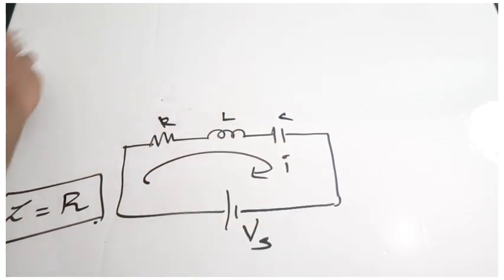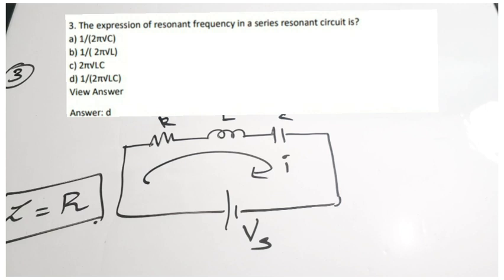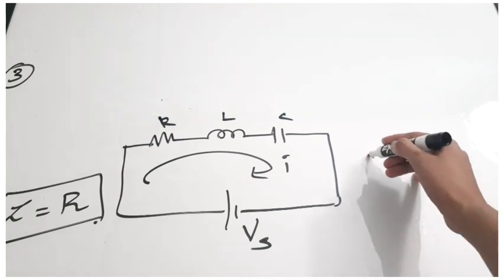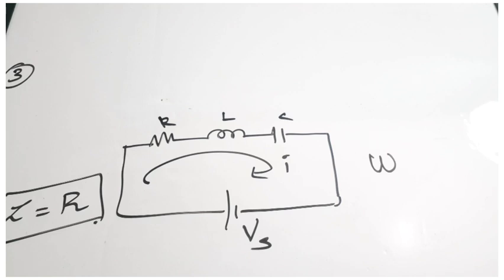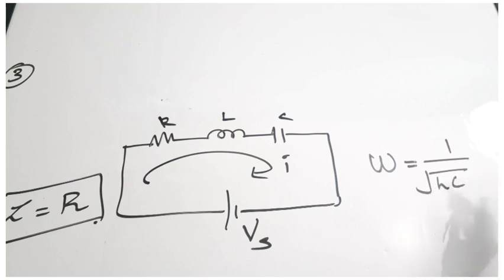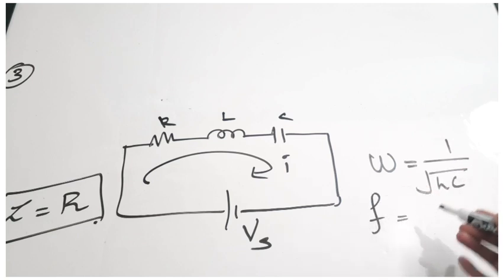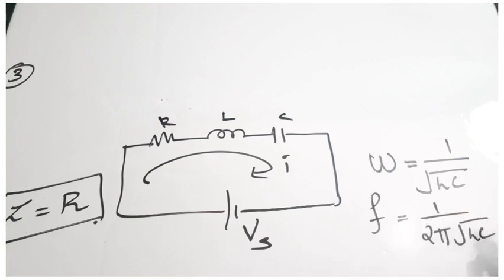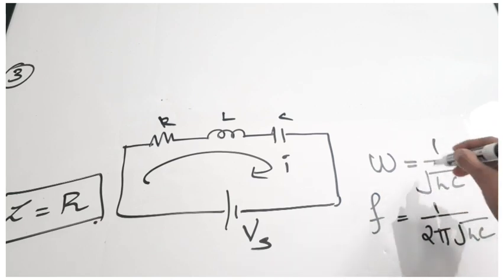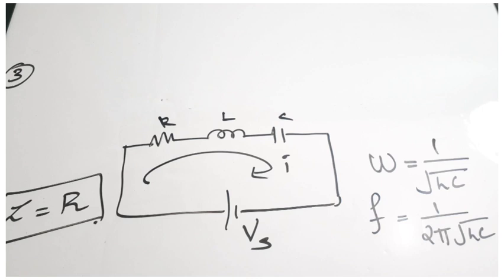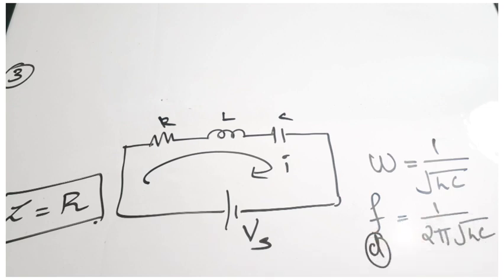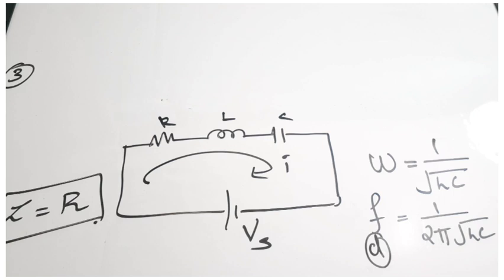Third question: the expression of resonant frequency in a series resonant circuit is dash. There are two frequencies — angular frequency and normal frequency in hertz. If it is angular frequency, the expression is omega equal to 1 by square root of LC. If it is in terms of normal frequency in hertz, then it is 1 by 2 pi square root of LC. This equation is very important. Here all the terms are given in F values, that is normal frequency, so correct answer is option D.